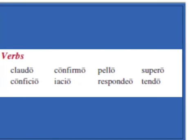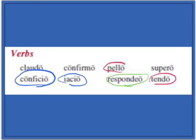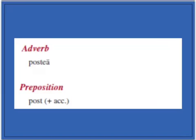Now, our verbs. First, we look for our EO verbs — respondeo is second conjugation. Then we look for our IO verbs — iacio and conficio are third IO. Then we have to distinguish our first, second, and thirds: tendo, pello, and claudo are all third conjugation. Confirmo and supero are first conjugation. And lastly, we have our adverb postea, which means 'afterwards,' and our preposition post plus the accusative, which means 'after.'